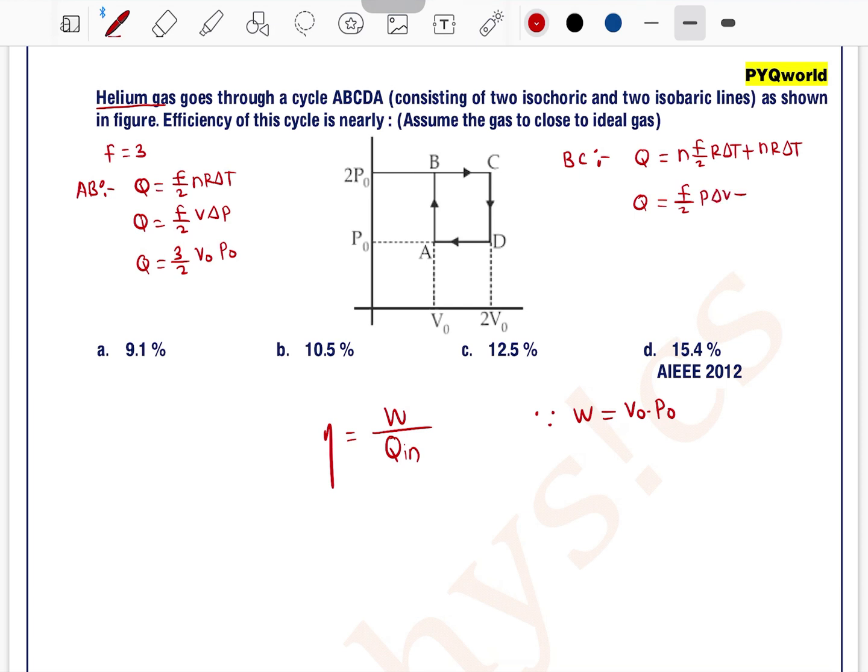So this can be written as Q equals F by 2 P into delta V plus P into delta V. So Q equals 3 by 2 P into, delta P is 2P₀, delta V is V₀, plus P is 2P₀, delta V is V₀. So this is equal to 5 by 2 times 2P₀V₀ which is equal to 5P₀V₀.